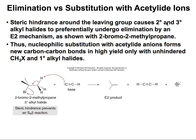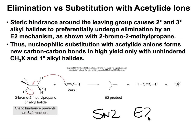When we have secondary or tertiary alkyl halides, because the molecule is already crowded and the acetylide ion is large, we end up getting elimination reactions — E2 reactions that happen in one step. The base gets the hydrogen, and the molecule collapses to give an alkene. Steric hindrance prevents the SN2 reaction. SN2 and E2 reactions often compete because the same molecule can act as a base or a nucleophile, so we evaluate the alkyl halide to determine which pathway occurs.